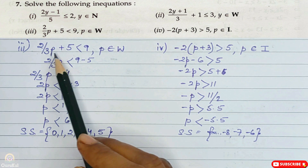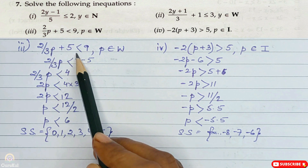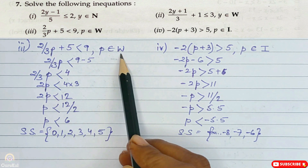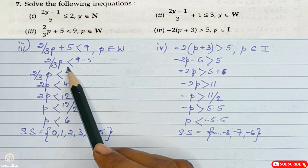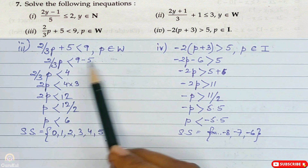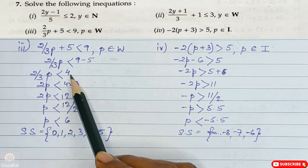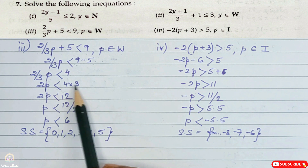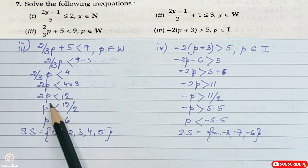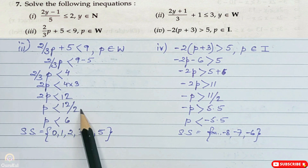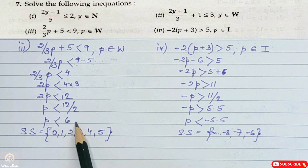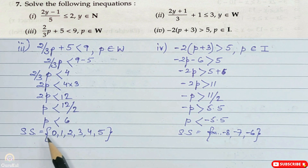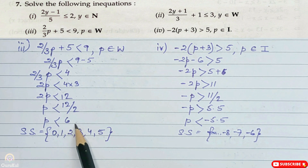Now the third part. It is 2 by 3p plus 5 less than 9, where p belongs to whole number. So 2 by 3p less than 9 minus 5. 2 by 3p less than 4. After subtracting, we cross multiply: so 2p less than 4 into 3. So 2p less than 12. Hence p is less than 12 by 2. Therefore p is less than 6. So our solution set is 0, 1, 2, 3, 4 and 5, because p is less than 6.